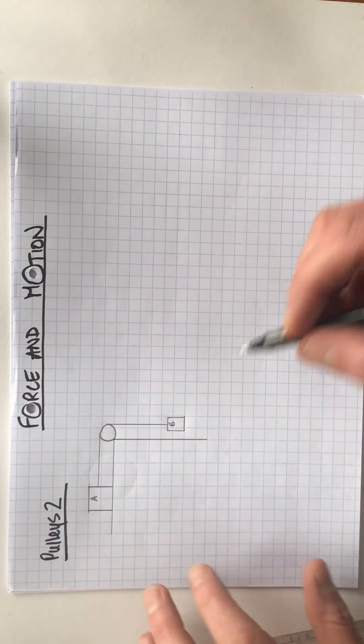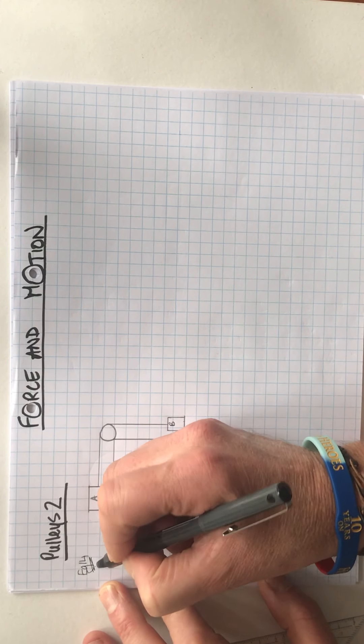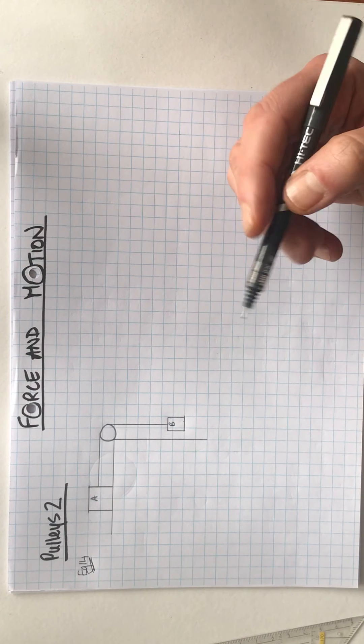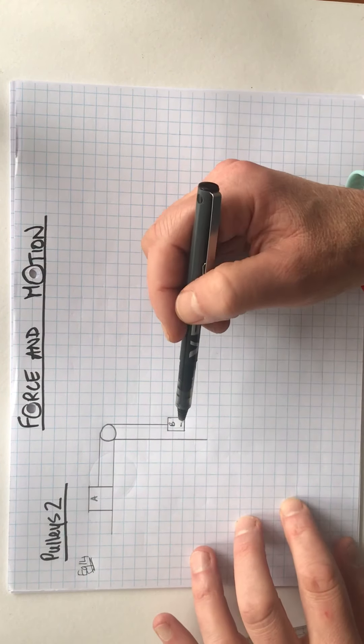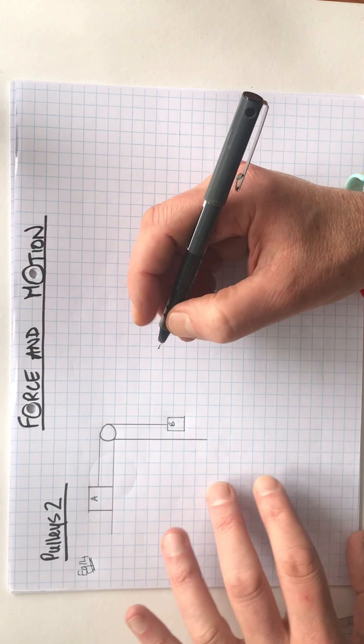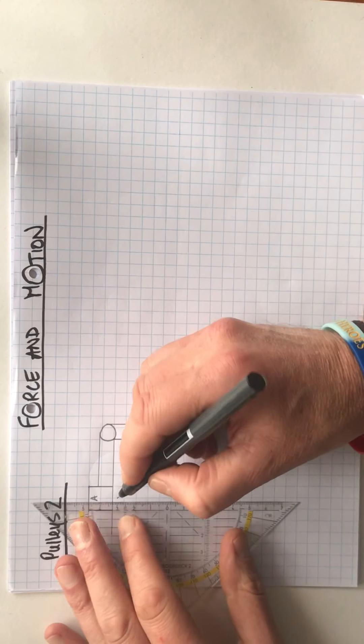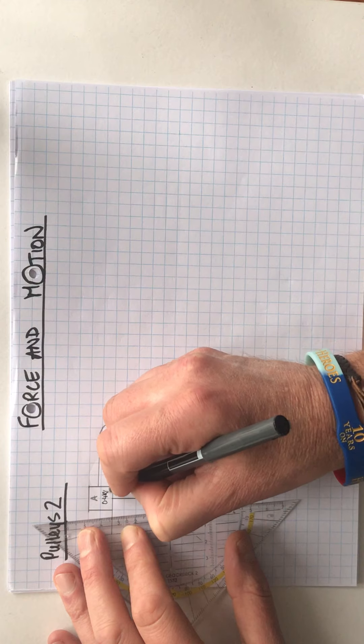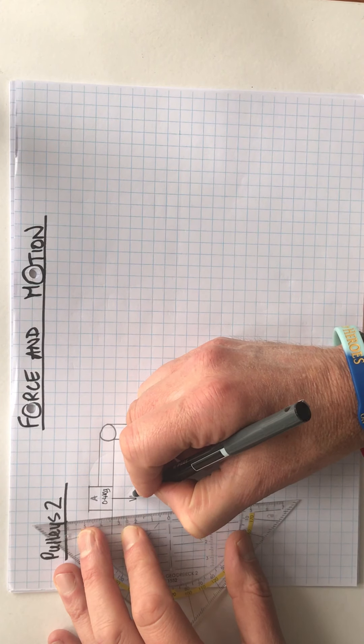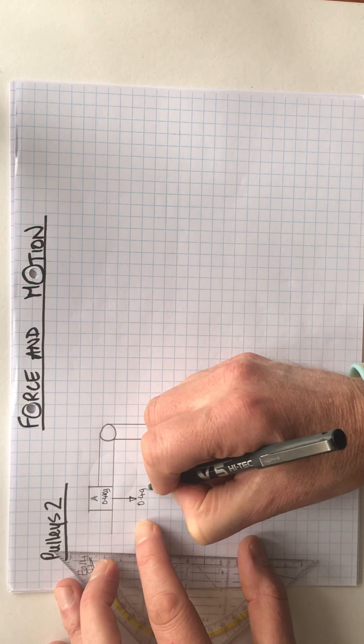I'm going to use example 14 from the textbook page 174 to help us get to grips with this one. In this particular one, we've got two particles, A and B, of masses 0.4 kilograms and 0.8 kilograms. So let's get these in.